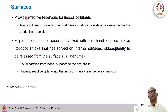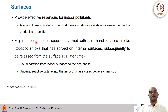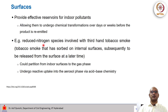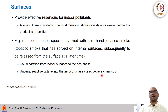In general, surfaces provide effective reservoirs for indoor pollutants, allowing them to undergo chemical transformations over days or weeks before products are re-emitted. As an example, reduced nitrogen species involved in third-hand tobacco smoke — smoke that has settled on internal surfaces and is released long after the smoking event — can partition from indoor surfaces to the gas phase and then undergo reactive uptake into the aerosol phase via acid-base chemistry.